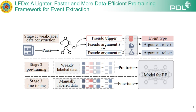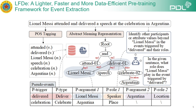The weak label data is generated by automatically identifying pseudo-triggers and arguments based on real events. The framework creates weak label data by automatically annotating pseudo-events on unlabeled texts from public sources, like news headlines from the internet. It uses part-of-speech tagging to identify pseudo-triggers and abstract meaning representation to find pseudo-arguments.